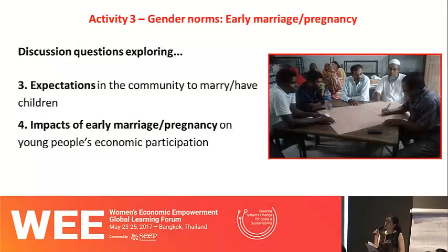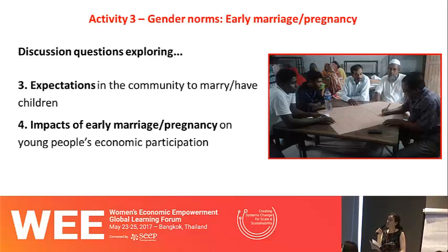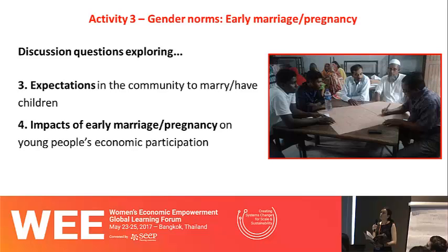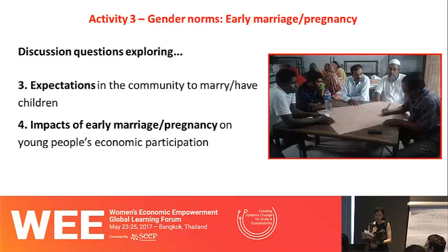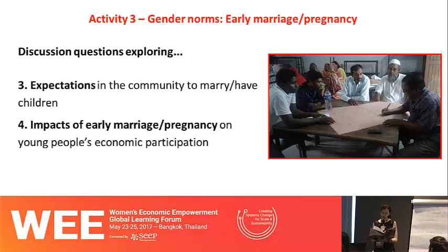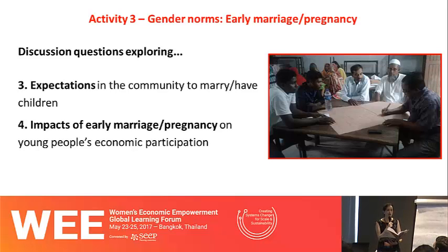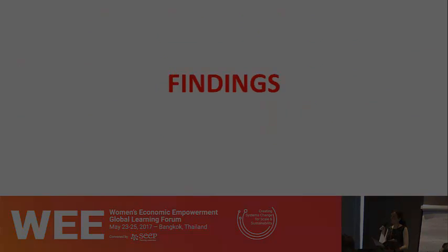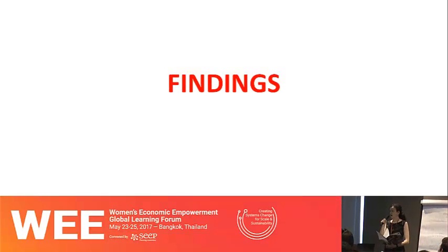The discussion questions on early marriage and pregnancy first looked at injunctive norms — the expectations in the community around young men and women marrying and having children. The second part looked at the impacts of early marriage and early pregnancy on young people's economic participation — how women are limited by marrying or having children early, and how norms around working women being seen as undesirable or unfeminine might also impact economic participation. I'll now hand over to Pushpita, who will give an overview of the findings.